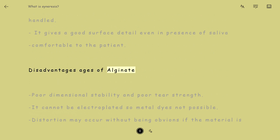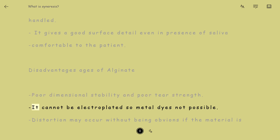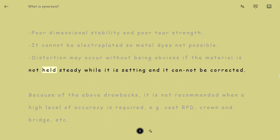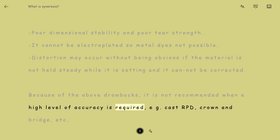Disadvantages of Alginate: Poor dimensional stability and poor tear strength. It cannot be electroplated, so metal dies are not possible. Distortion may occur without being obvious if the material is not held steady while setting, and it cannot be corrected. Because of these drawbacks, it is not recommended when a high level of accuracy is required, e.g., cast RPD, crown and bridge, etc.